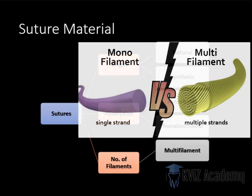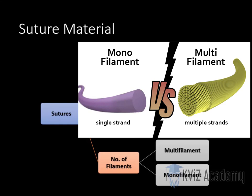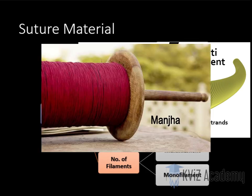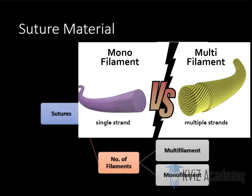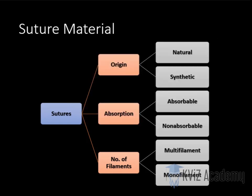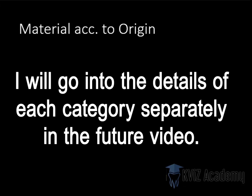In monofilament it is a single thread, so the surface area is less and it will be smoother — less traumatic to the tissue. Multifilament is like a kite string — it is multithreaded, creates more friction, and causes more damage to the opposing structure. Monofilament has no problem like that. So multifilament is more traumatic to the tissue, whereas monofilament is less traumatic. We are going to go into the details of all these materials.